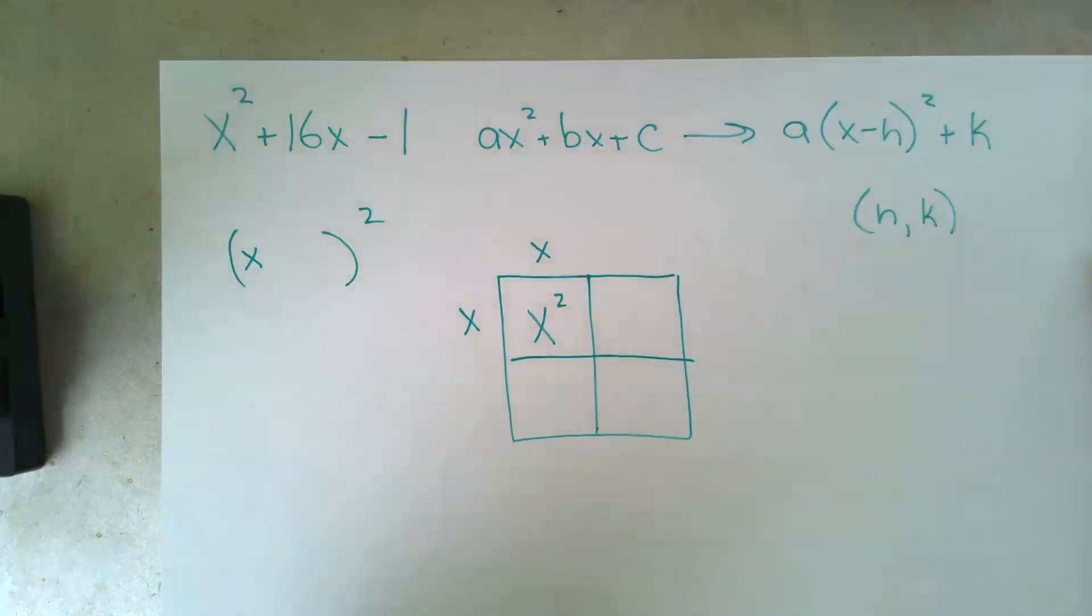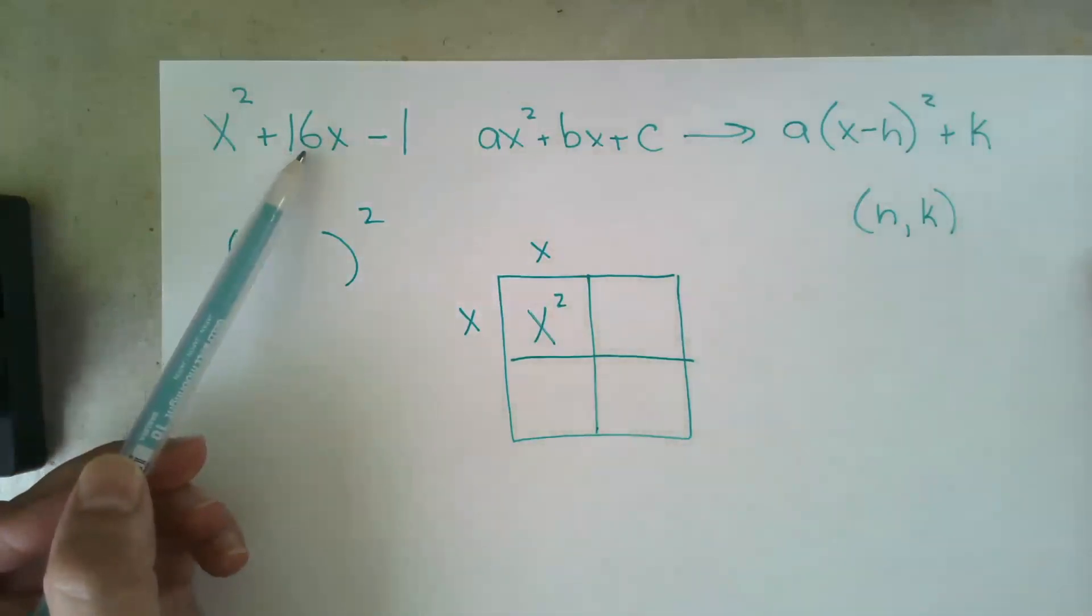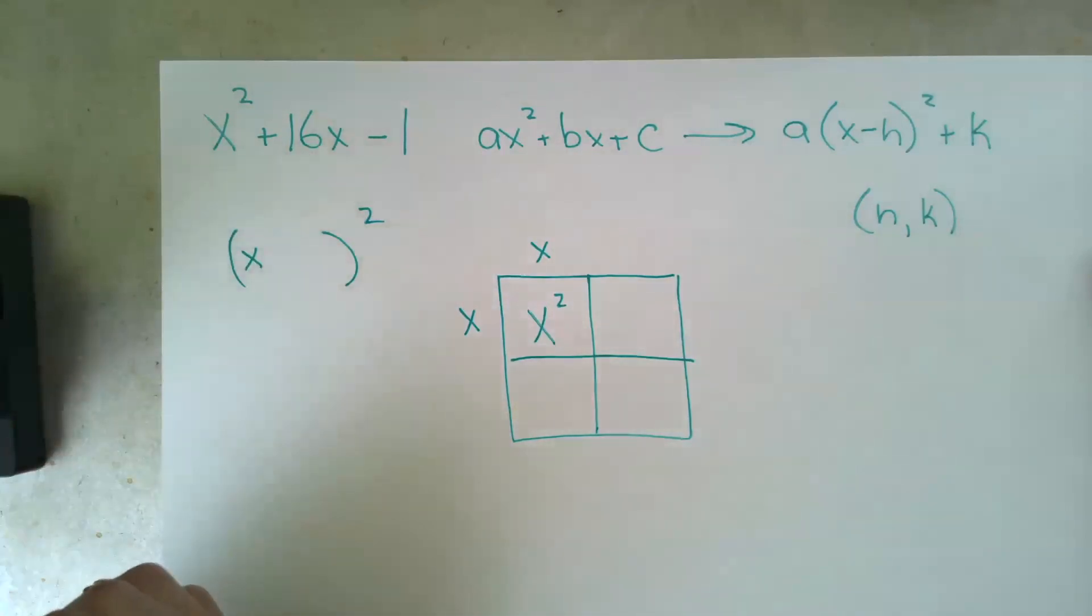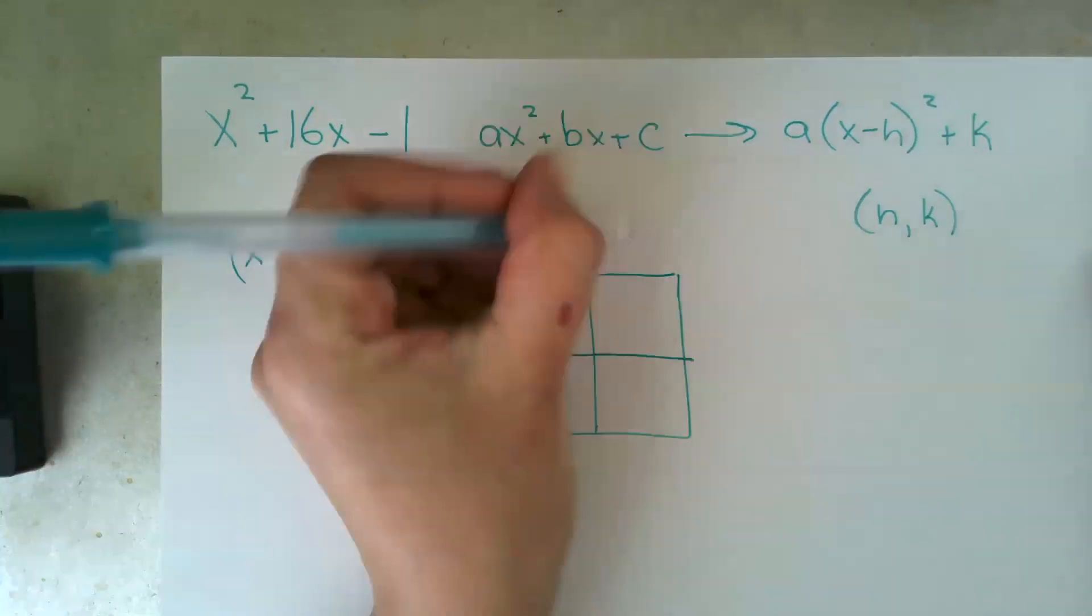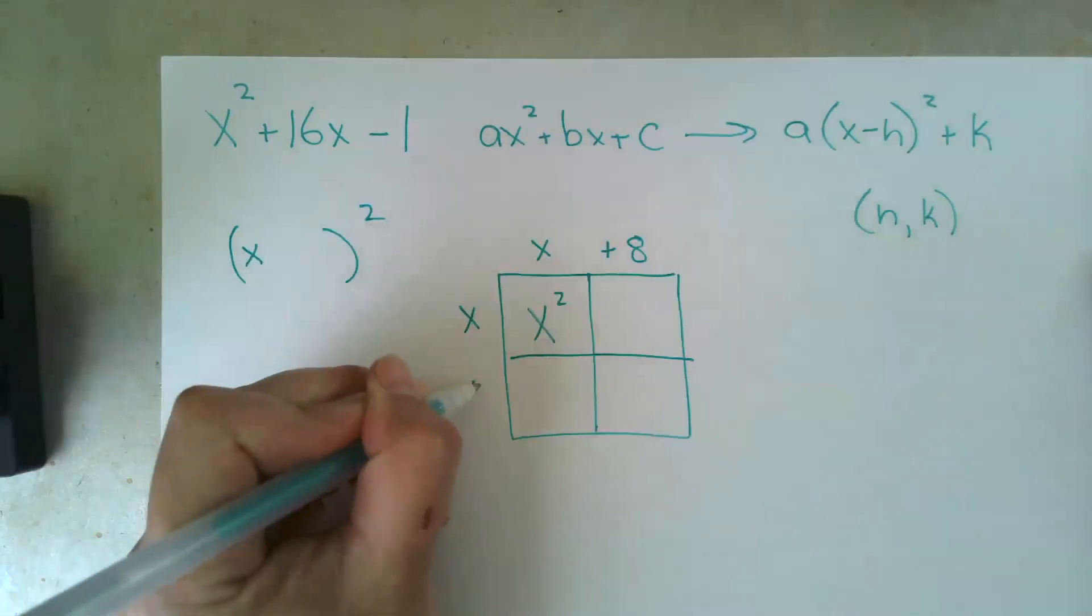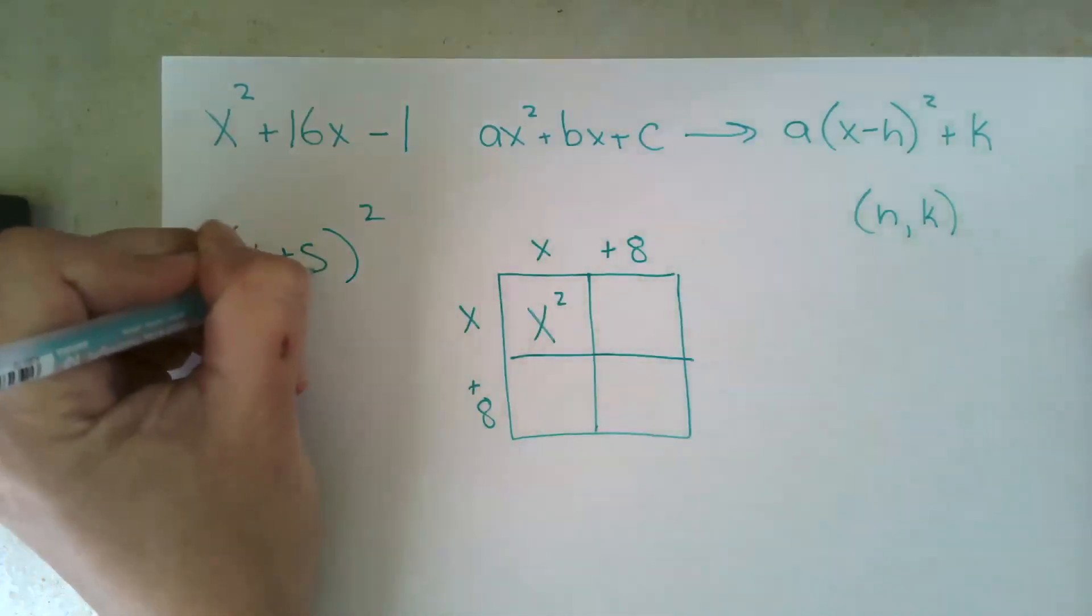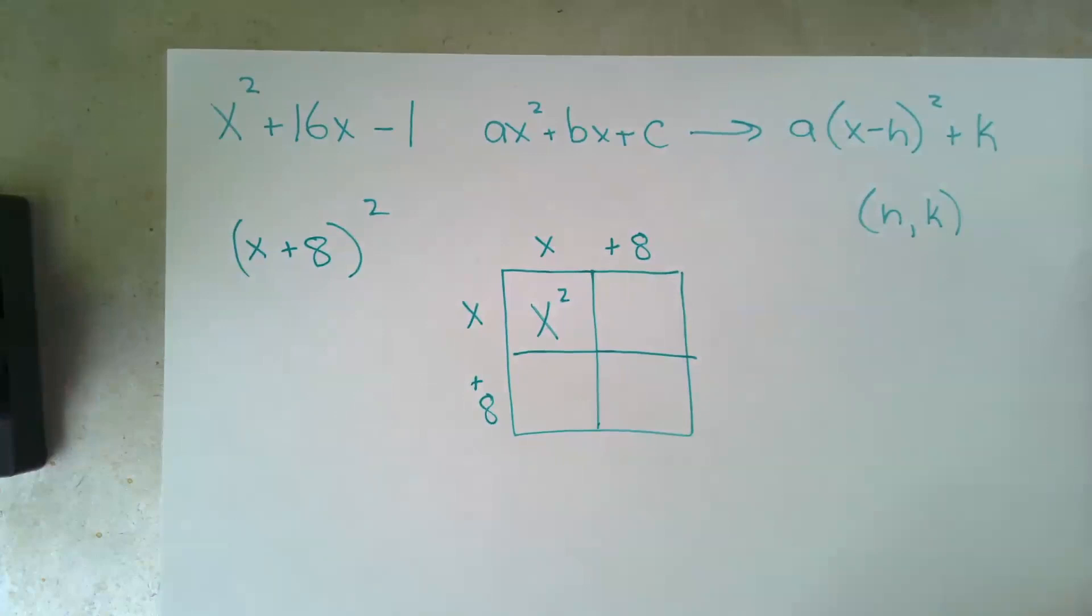Okay, the next thing we want to check out is the coefficient of our x. It is 16. So half of that, 16 divided in half, is a positive 8, and that is the second thing that goes inside our parentheses. So now we've created the perfect square.